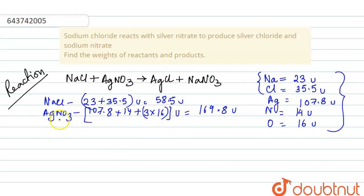So let us add weight of reactants: equals to 58.5 plus 169.8 atomic mass unit, which equals to 228.3.